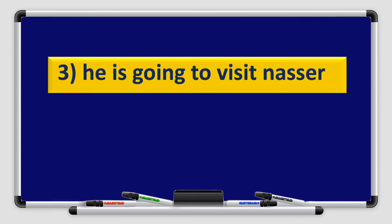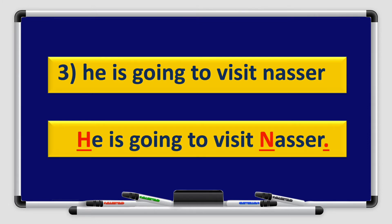He is going to visit Nasr. The H is capitalized because it's the beginning of the sentence. N here is capitalized because it's a name. And then a full stop at the end of the sentence. He is going to visit Nasr.